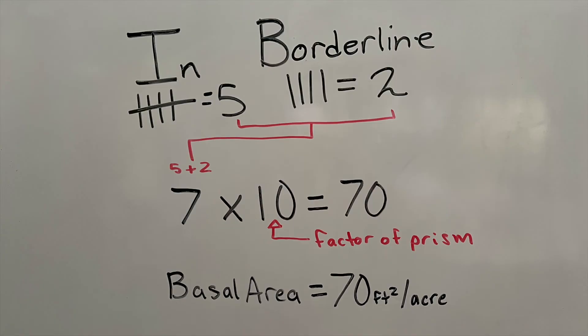Your prism will say on it which unit it is using, either imperial or metric. Once we have those two units, in our case 7 and 10, we're going to multiply them together giving us our final basal area.